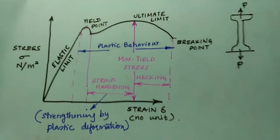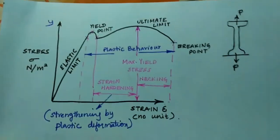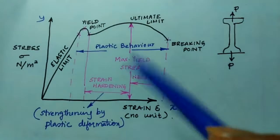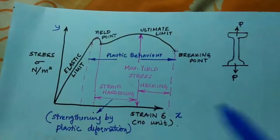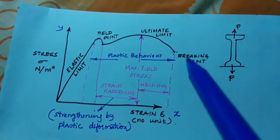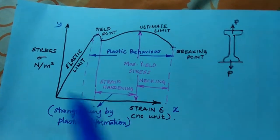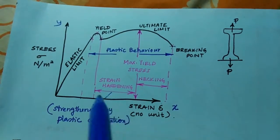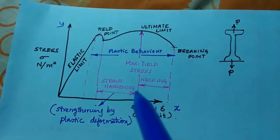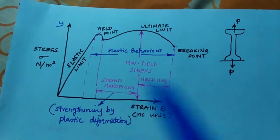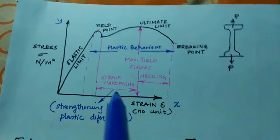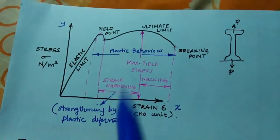Now the stress-strain curve. On the y-axis we have stress and on the x-axis we have strain. There are four important points: elastic limit, yield point, ultimate limit, and breaking point. After that we have strain hardening. What is strain hardening? The region between the lower yield point and the ultimate limit is called strain hardening — it shows, for a ductile material, how much strain by plastic deformation occurs.